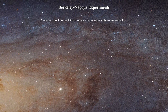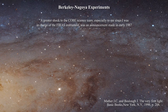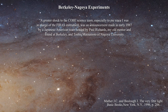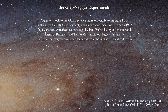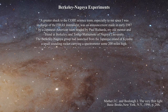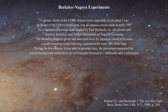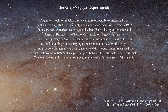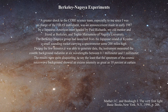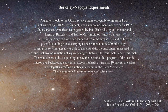Here is what he said: 'A greater shock to the COBE team, especially to me since I was in charge of the FIRAS instrument, was an announcement made in 1987 by a Japanese-American team headed by Paul Richards, my old mentor and friend at Berkeley, and Toshio Matsumoto of Nagoya University. The Berkeley-Nagoya group had launched from the Japanese island of Kyushu a small sounding rocket carrying a spectrometer some 200 miles high. During the first few minutes it was able to generate data, the instrument measured the cosmic microwave background at six wavelengths between 0.1 mm and 1 mm. The results were quite disquieting to say the least — the spectrum of the cosmic microwave background showed an excess intensity as great as 10% at certain wavelengths, creating a noticeable bump in the blackbody curve.'